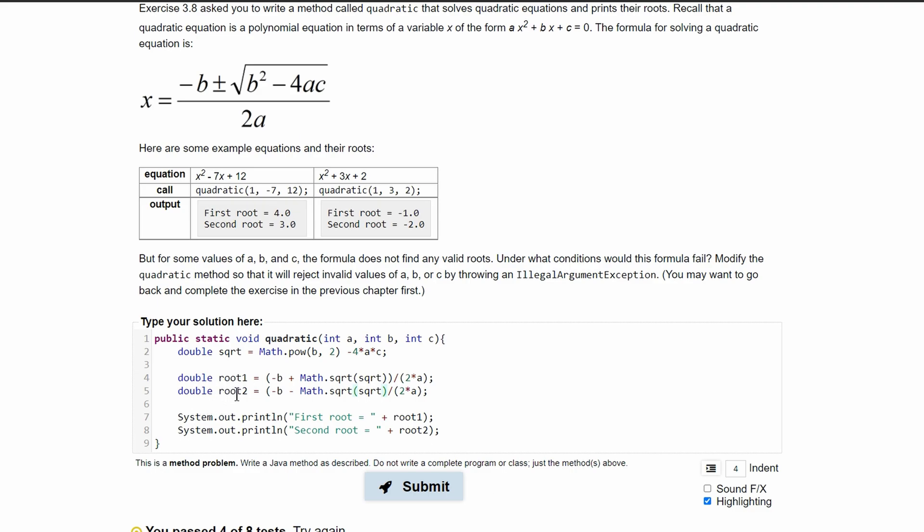If we wanted to make this code even simpler, we could really just copy both of these and then put them in here so we don't have to call root1 and root2, but we'll look at that in a second.